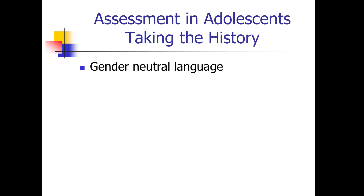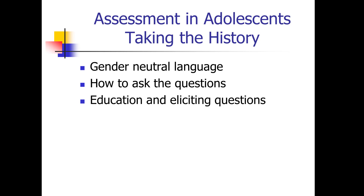We need to pay attention to how we take the history in adolescence, particularly sexual history. It's important to use gender-neutral language. So rather than saying, do you currently have a boyfriend or do you currently have a girlfriend, we need to use other language, such as, are you currently in a romantic relationship with someone, and follow through with using gender-neutral language throughout the interview. How to ask the questions is an important consideration for psychiatric mental health nurses in order to provide a safe space for the adolescent to disclose. The education and eliciting of questions is another important component, and we want to be clear that we are not here to make judgments of the adolescent.